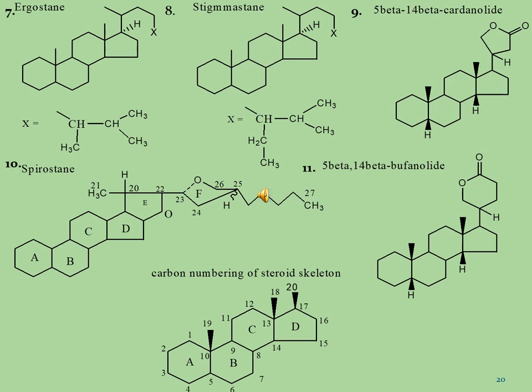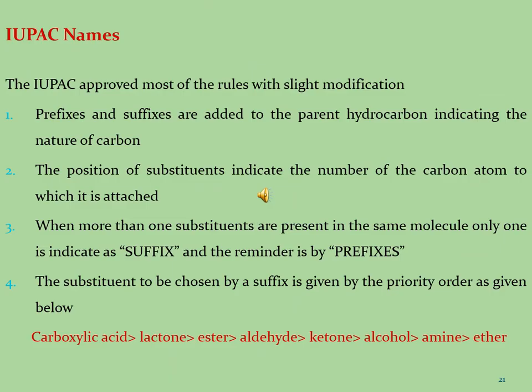Now we will discuss the IUPAC names of steroidal molecules. In this slide, we will learn how to give names to complicated steroidal structures. The IUPAC approved most of the rules with slight modifications, which we will discuss here. It consists of 8 rules, which we will discuss one by one.